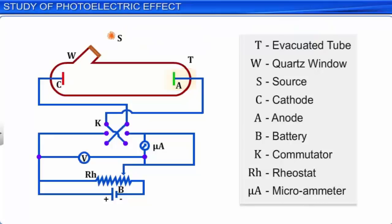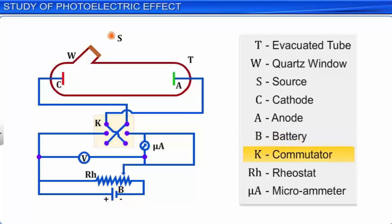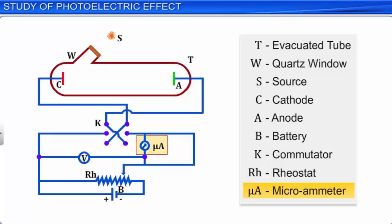Another metal plate A, called the collector plate or anode plate, is also sealed inside the evacuated tube. A battery B is connected to the emitter and collector plate to provide the potential difference, through a commutator K, which is used to reverse the polarity of the cathode and the anode. The apparatus also consists of a rheostat RH, which can be used to adjust the potential difference applied between cathode and anode, and a microammeter A, which measures the photoelectric current in the external circuit.